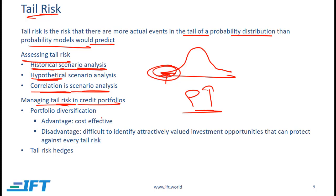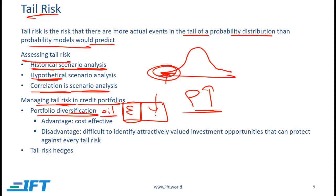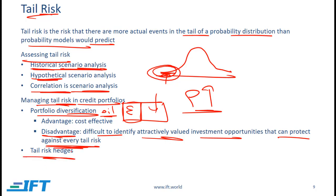Managing tail risk in credit portfolios: the most cost-effective method is portfolio diversification. For example, if the portfolio has high exposure to the energy sector — which performs poorly when oil prices fall — we should also include bonds from a sector like airlines, which does well when oil prices fall. The disadvantage is that it is often difficult to identify attractively valued investments that protect against every tail risk. Another approach is to use tail risk hedges via credit default swaps or options, but this is a relatively expensive strategy.